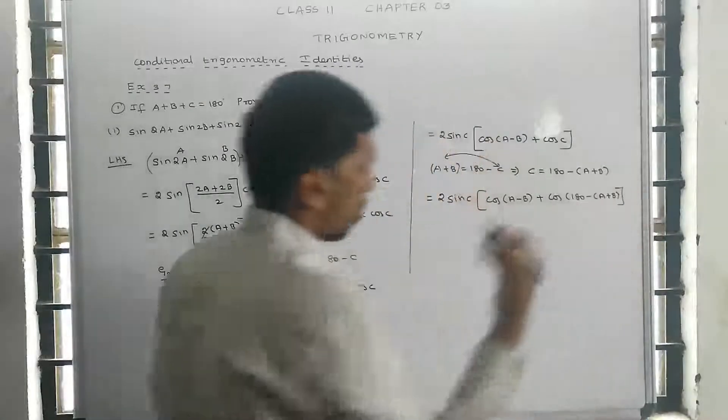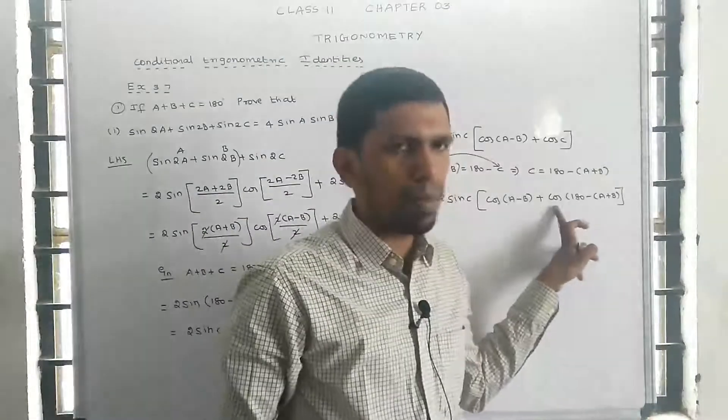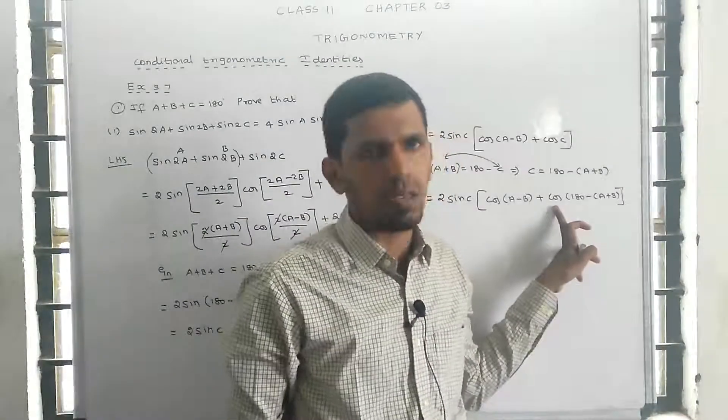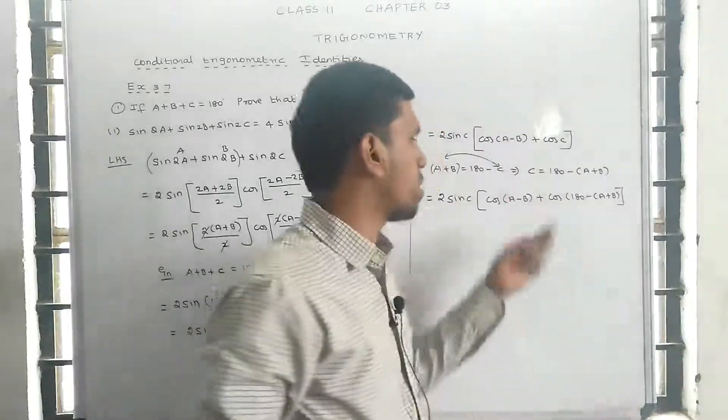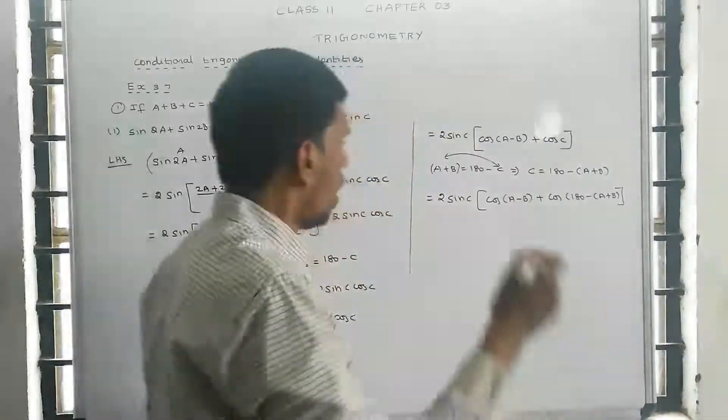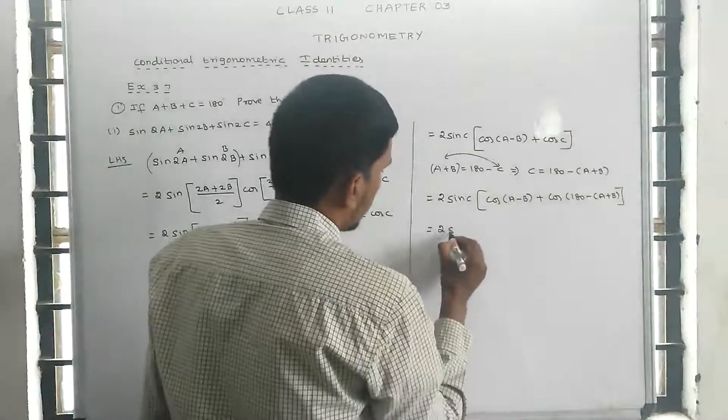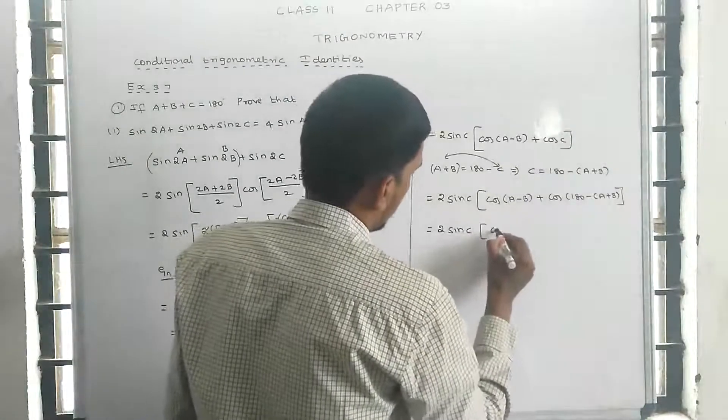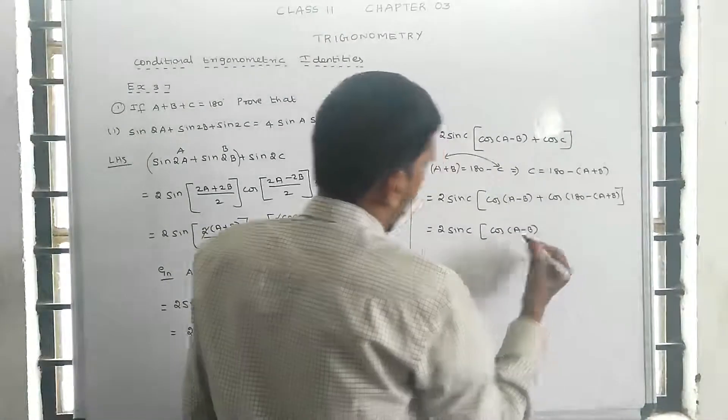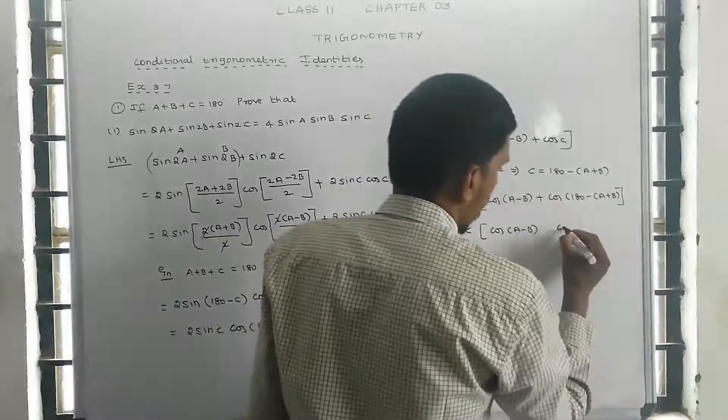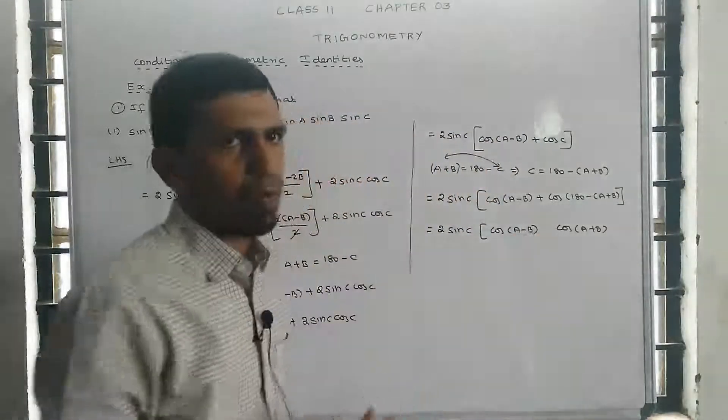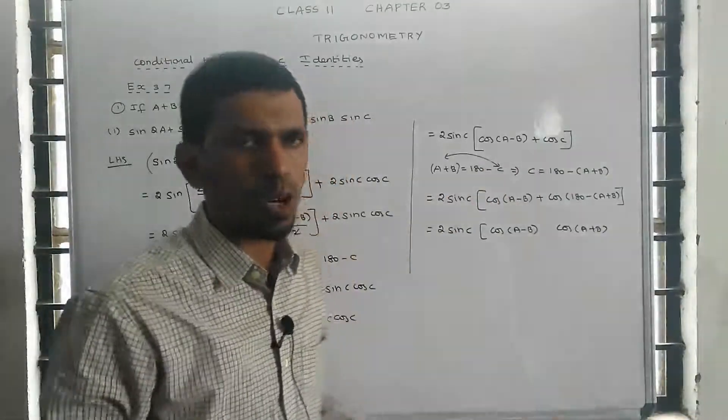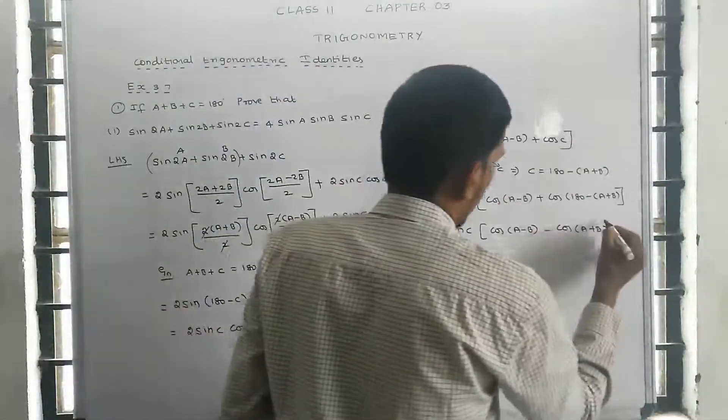Since cos(180 - θ) = -cos(θ), we have 2 sin c times [cos((a-b)/2) - cos(a+b)].